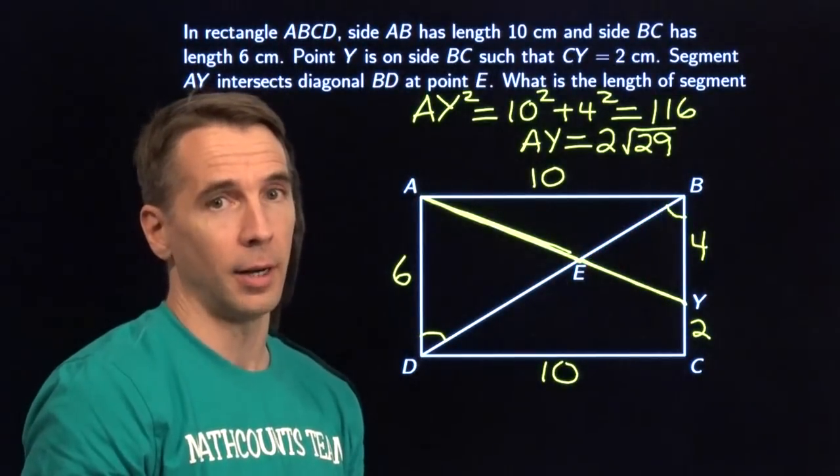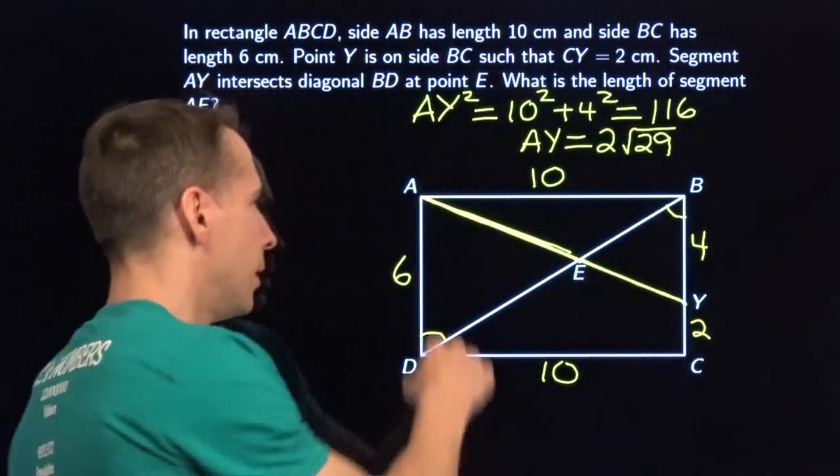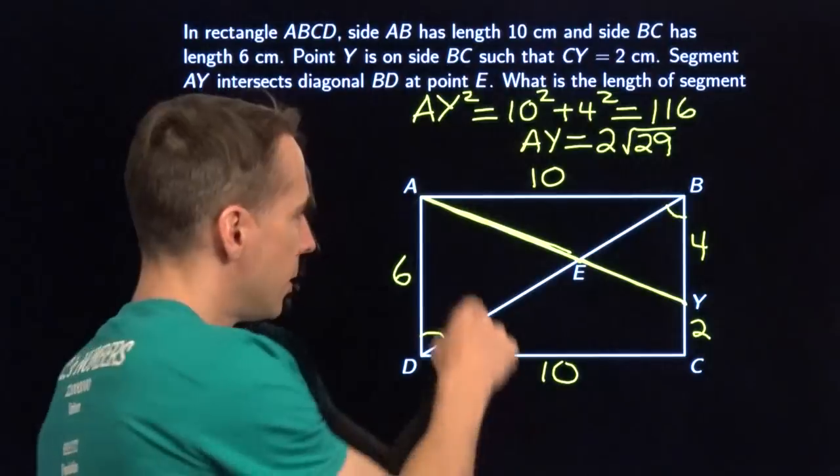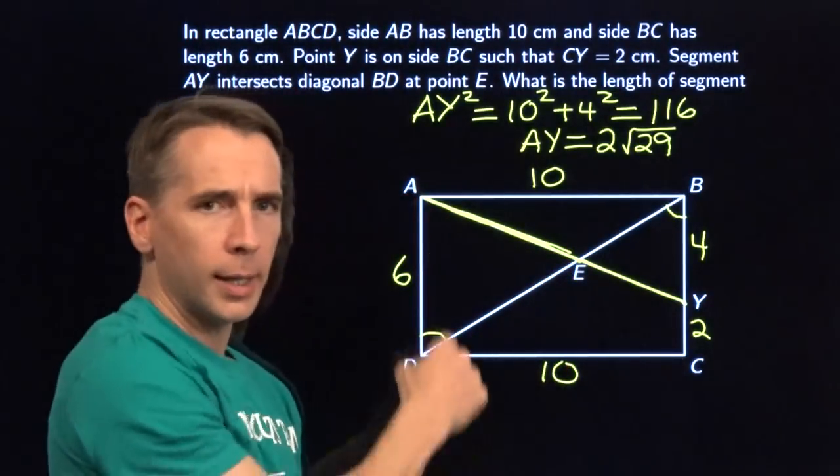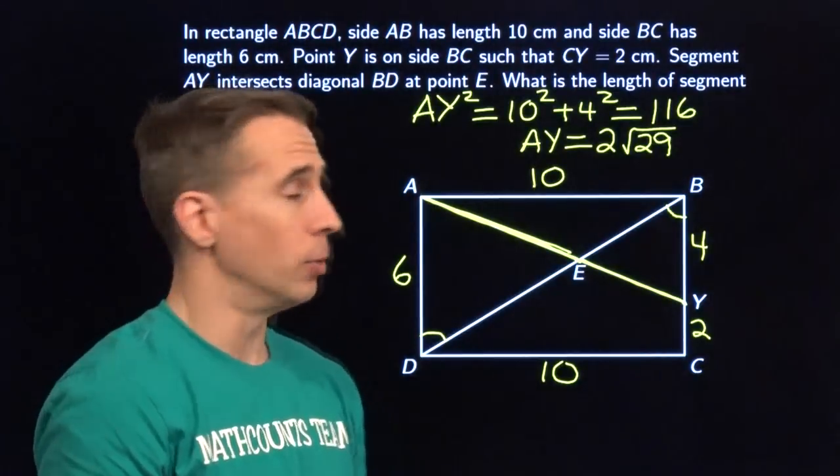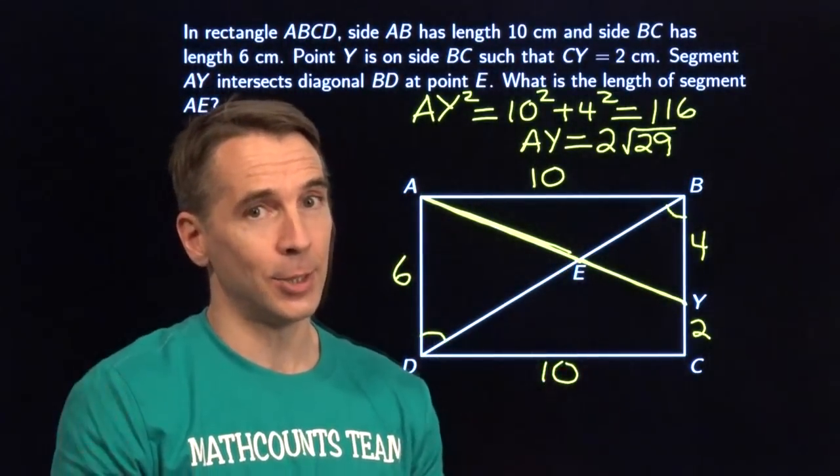They're opposite these equal angles right there. So the ratio of AE to EY is the same as the ratio of AD to BY. So the ratio of AE to EY equals 6 to 4. And 6 to 4, of course, that's 3 to 2. So the ratio of AE to EY is 3 to 2.